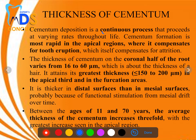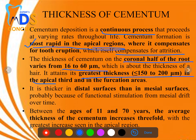Cementum deposition is a continuous process proceeding at varying rates. Formation is most rapid in the apical areas because the tooth needs to compensate for attrition. In the coronal half, cementum is thin — around 16 to 60 micrometers — and it is greatest in the apical third and in the furcation areas of multi-rooted teeth.